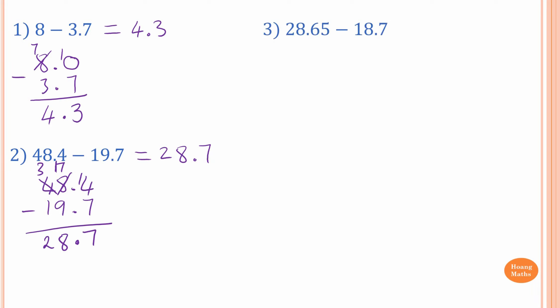Number 3: 23.65 minus 18.7. I just write this down. Make sure the place values are matched, otherwise it would be wrong. The decimal point must be underneath each other, then the place value will be the same. And 18.7 is exactly the same as 18.70. So now I just minus as per normal.